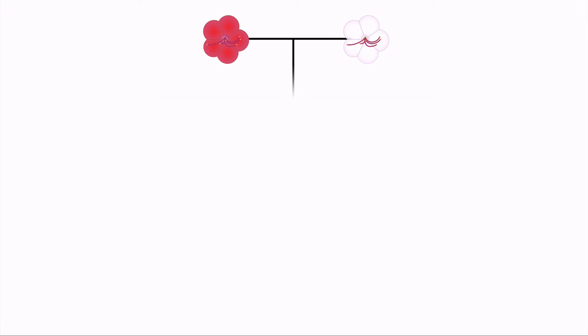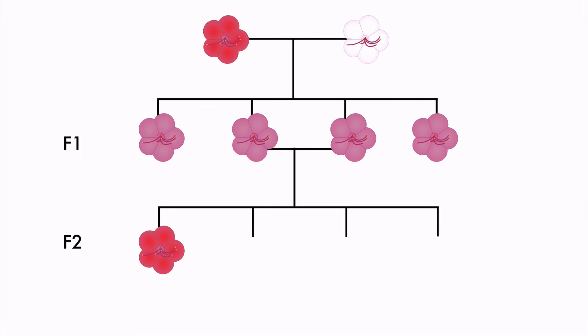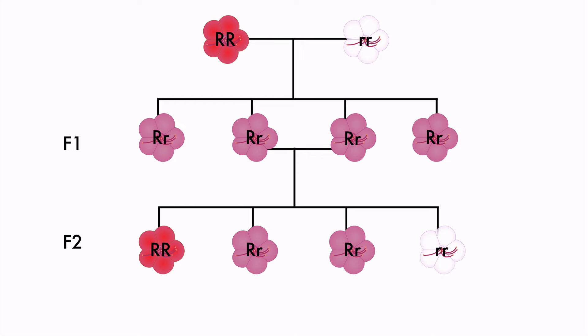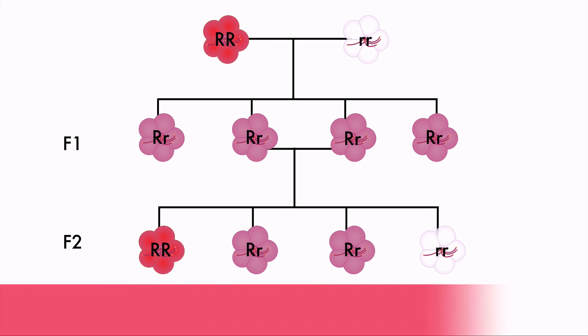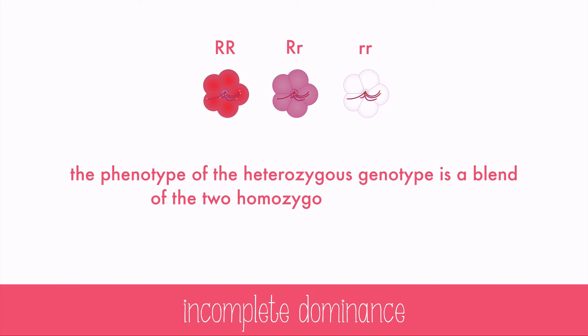Sometimes traits aren't purely dominant or recessive and don't follow Mendel's rules. Traits can also appear to blend when they're heterozygous, but when they're homozygous, the parent traits appear. Here, the red and white colors blend into pink in Japanese 4 o'clock flowers. This is an example of incomplete dominance, where the phenotype of the heterozygous genotype is a blend of the two homozygous phenotypes.